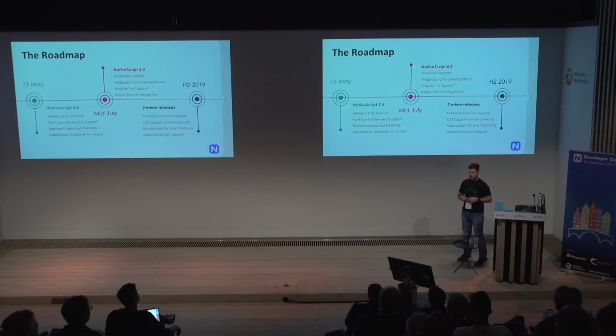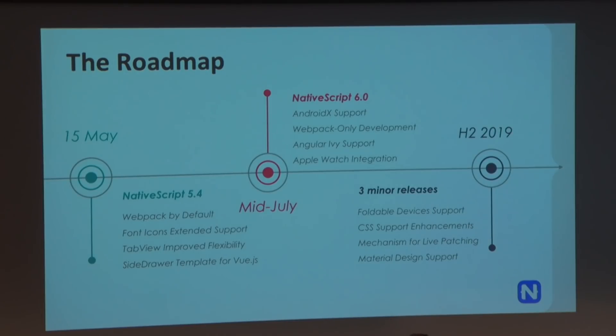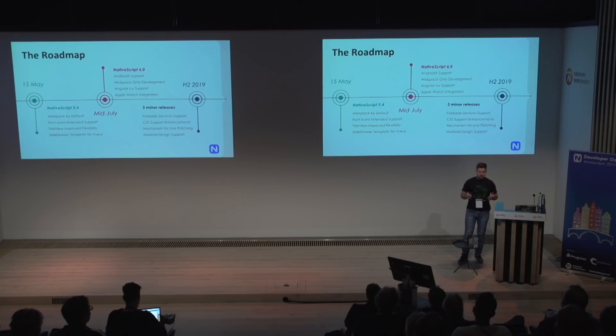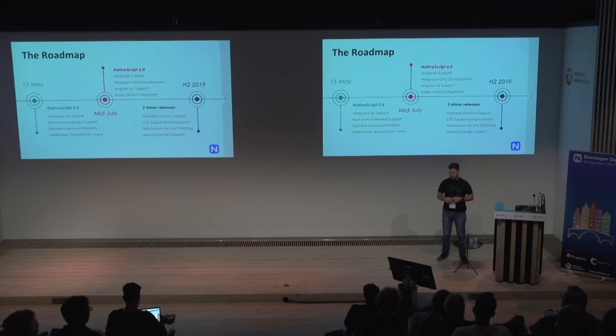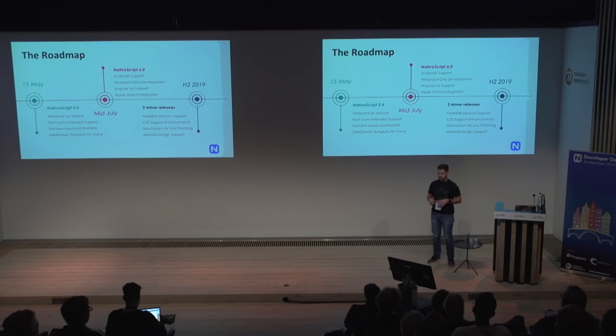Another thing we are currently investigating is a live patching mechanism. We know it's sometimes a tedious job to push a small fix through the app store process, so we'd like to provide a way to push such changes faster and without needing to go through the official process. And the last thing I'm really excited about is material design support. It started as a community effort — one of our contributors, Martin Giwan, prepared a set of 12 components that implement material design. We are currently working with him to see how this fits holistically into the framework, covering theming, routing, navigation, animation, and more. I hope by the end of the year we'll have a really strong material design story. But if you need such components right now, they are already published and usable.